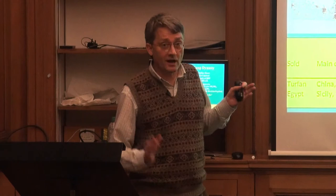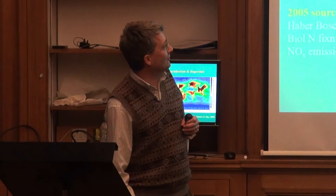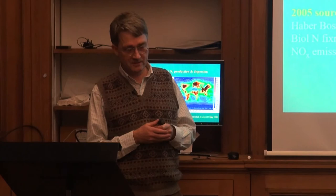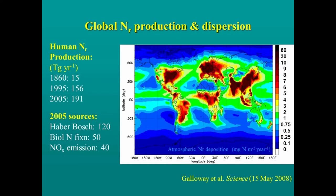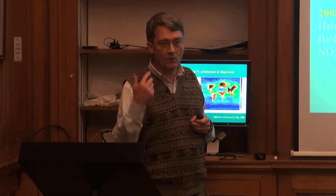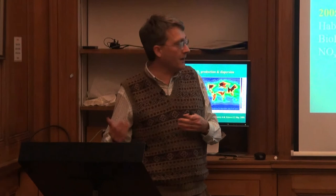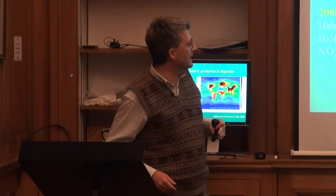Nitrogen is crossing society and the planet in ways people never dreamt of. Having made all that fertilizer, nitrogen emitted into the atmosphere as ammonia, NOx, and other forms creates huge deposition hotspots globally. Human nitrogen production has gone up from around 15 million tons to nearly 200 million tons. The sources include Haber-Bosch fertilizer, biological nitrogen fixation, and nitrogen oxide emissions from combustion — the greatest geoengineering experiment ever made.